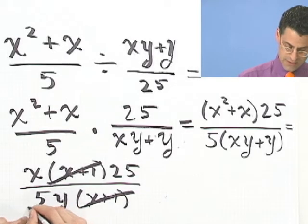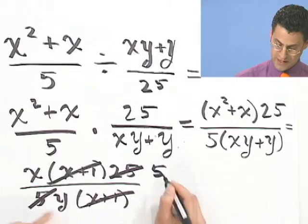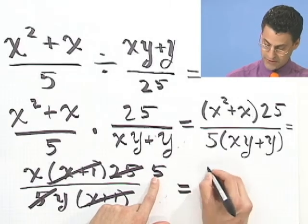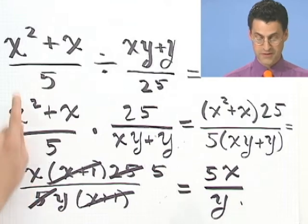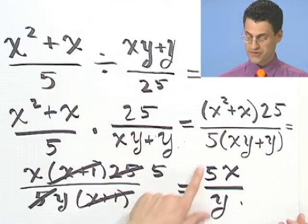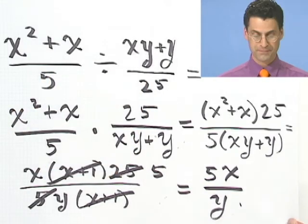And what about the 5's? This 5 counts with that 5. I have a 5 on top. I'm going to remember it this time. So I see a 5x all divided by y. And so the quotient of these two rationals turns out to be just 5x divided by y. OK.